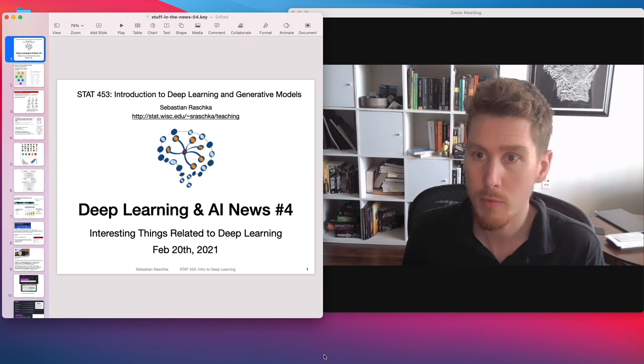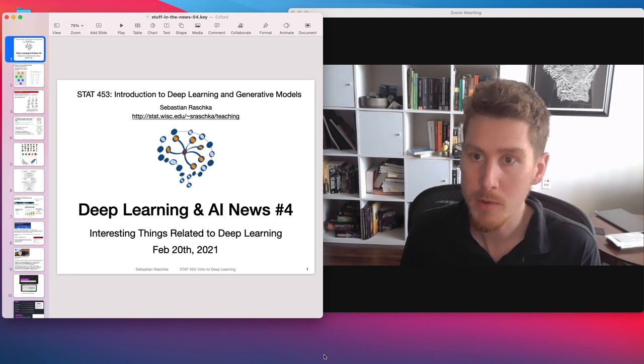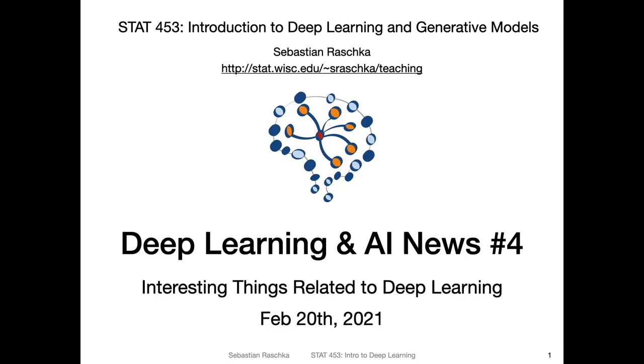I hope you liked the content on PyTorch and the cloud computing resources from last week. In today's stuff in the news section, I wanted to give you a brief update on what's happening in the deep learning world. Coincidentally, there were some interesting tools around PyTorch, some interesting news regarding cloud computing and its implications on the environment, and also some not-so-nice applications of deep learning regarding ethical AI. So there's a variety of news again this week — let's dive in.